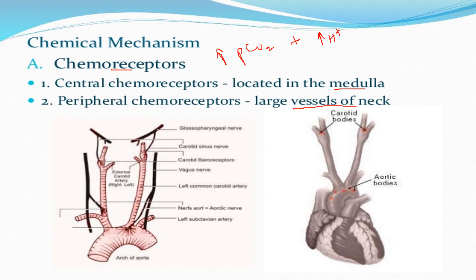High H+ ions means decreased pH. Peripheral chemoreceptors are associated with the aortic arch (aortic body) and carotid arteries; they recognize changes in carbon dioxide and H+ ions and send signals to the respiratory center for immediate action. Oxygen's role in regulating respiratory rhythm is significant because of the sigmoidal dissociation curve — at any partial pressure of oxygen above 80 mmHg, saturation is maintained.